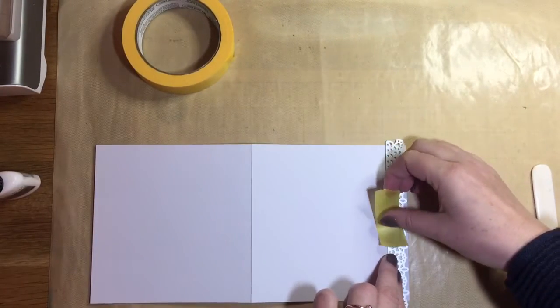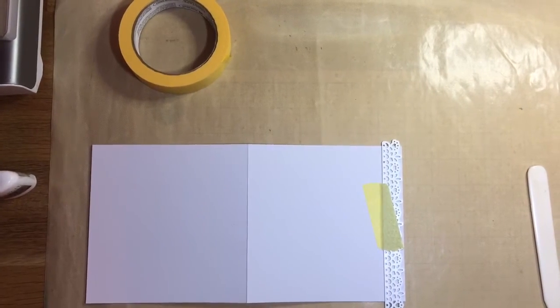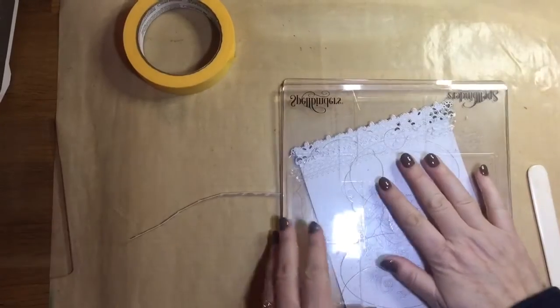I don't want it to tear my card as I pull it off. I'm just going to run that through my machine. Now, I want to mention I've put this through at an angle because it's a card blank and it's too long to go through sideways.